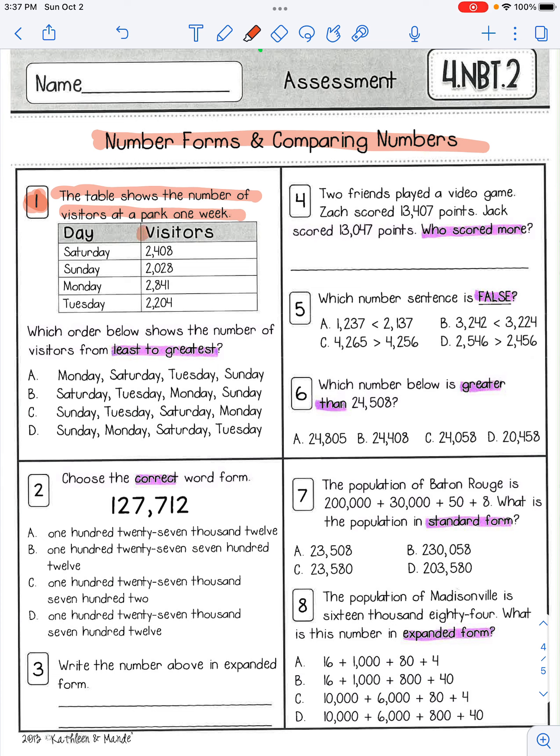So you have the day here and the visitors here. Which order below shows the number of visitors from least to greatest? Least to greatest. So you're going to look at the visitors section and you're going to put them in order from least to greatest. And then you have your answer choices A, B, C, or D. Please only make one answer choice.